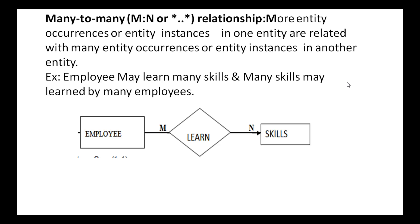Next is many-to-many relationship: many entity occurrences in one entity relate with many entity occurrences in another entity. For example, an employee may learn many skills, and many skills may be learned by many employees. So many employee instances relate to many skills in the skills entity, and many skills are learned by many employees — that's why a many-to-many relationship exists between the employee and skills entities.